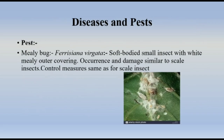Pests — Mealybug (Ferrisia virgata): A soft-bodied small insect with white mealy outer covering. Its occurrence and damage are similar to scale insects and control measures are the same as for scale insects.